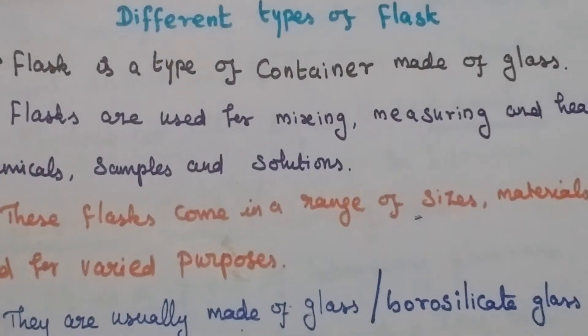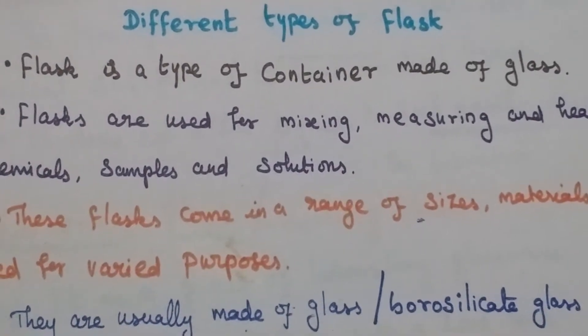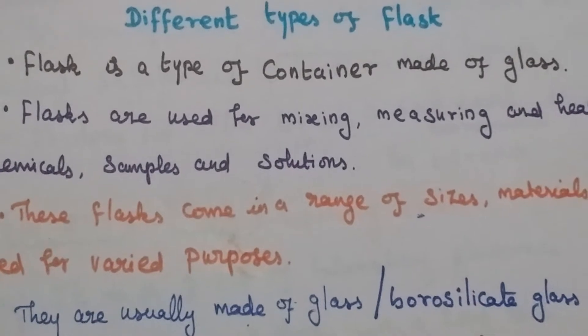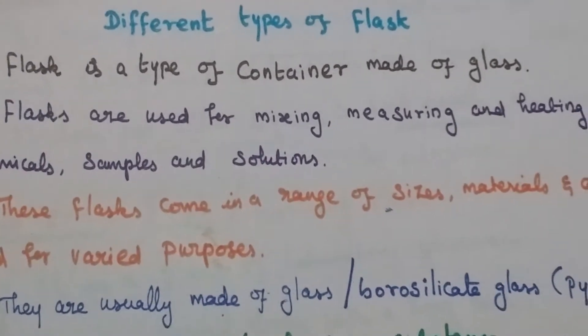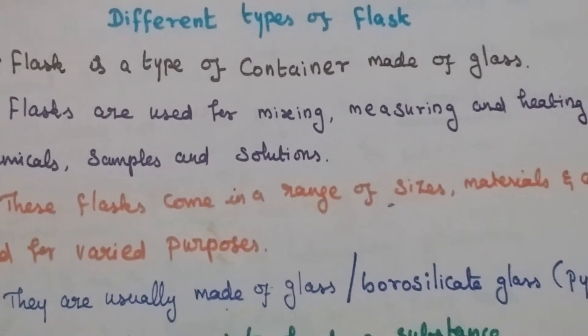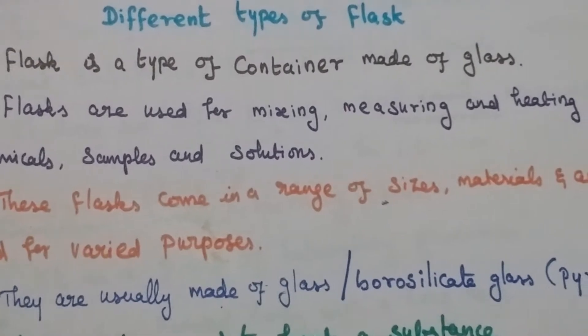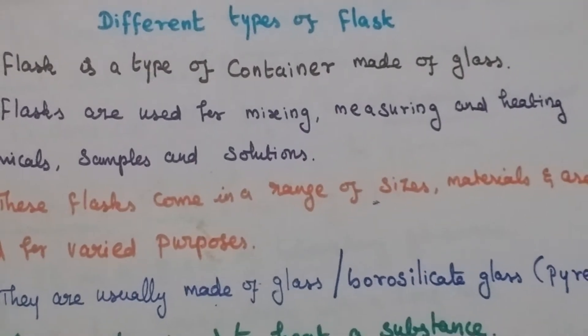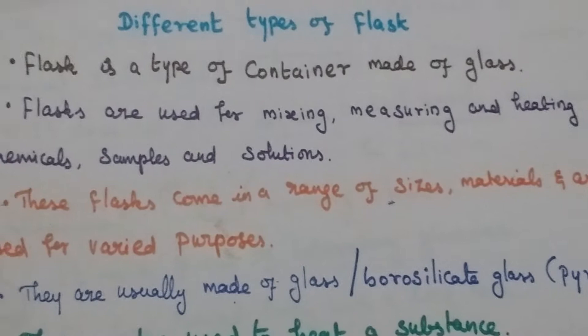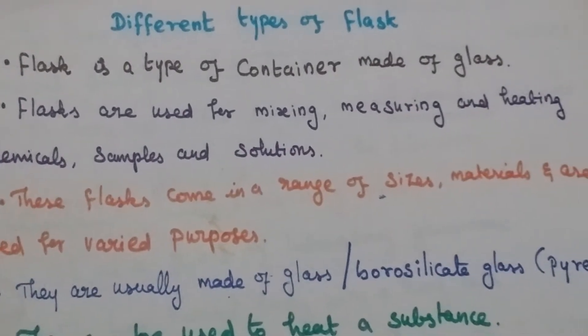Today we will discuss different types of flasks. What is a flask? It is a type of container made of glass. Flasks are used for mixing, measuring and heating chemical samples and solutions.